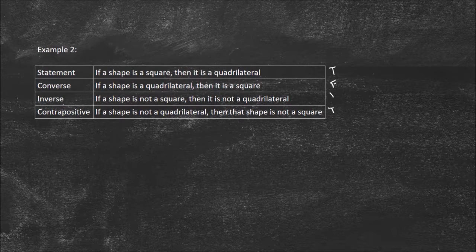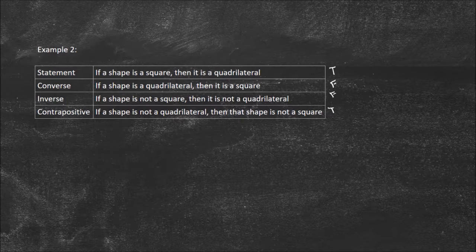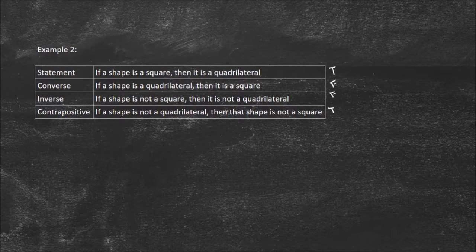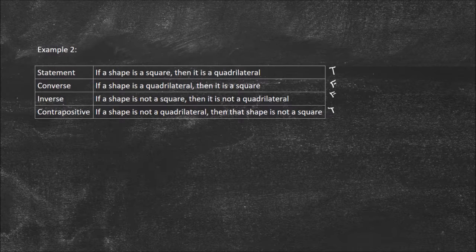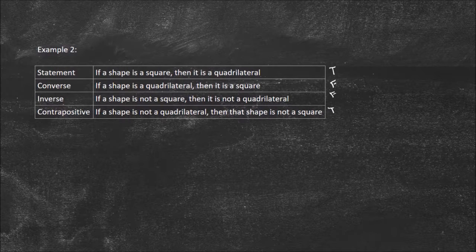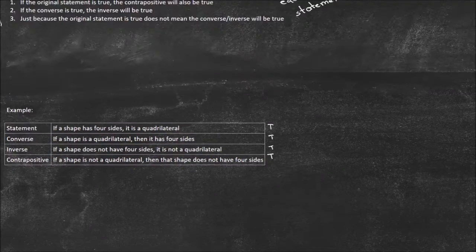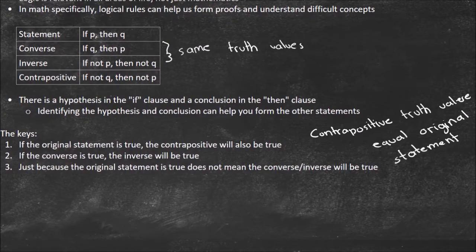Since the converse is false, the inverse is false as well, because they share the same truth value. Let's verify: if a shape is not a square, then it is not a quadrilateral. Consider a parallelogram — it's not a square, but it is a quadrilateral, so that statement is false. Lastly, the contrapositive: if a shape is not a quadrilateral, then it is not a square. If it's not a quadrilateral, it doesn't have four sides, and no shape without four sides can be a square — so that is true. Those are the three keys that help us solve logic problems much more quickly, so I recommend you memorize them.